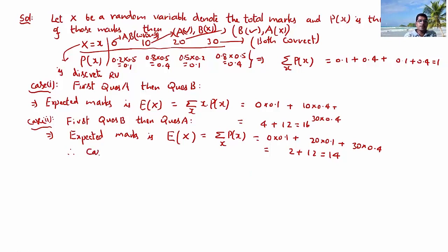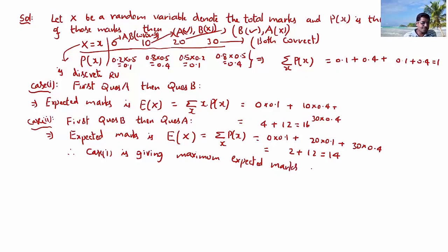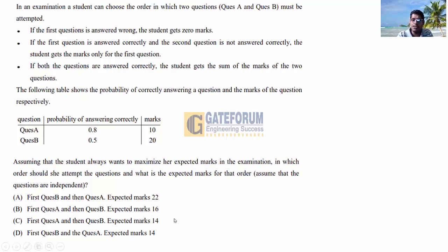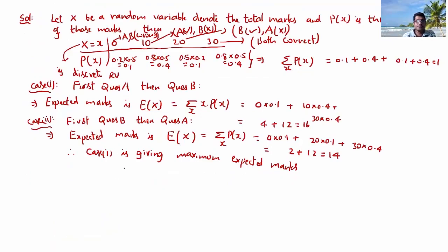Therefore, Case 1 gives the maximum expected marks. The student should attempt question A first, then question B, giving an expected marks of 16. Options A and B are ruled out; the correct answer is option C with expected marks 16.